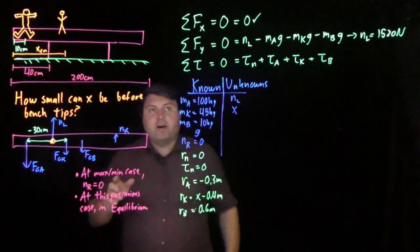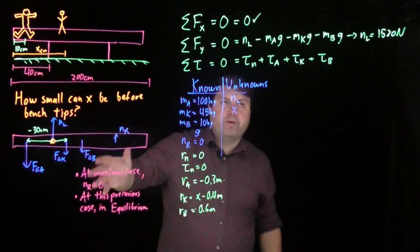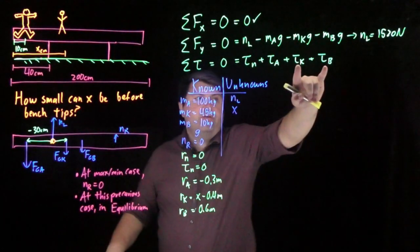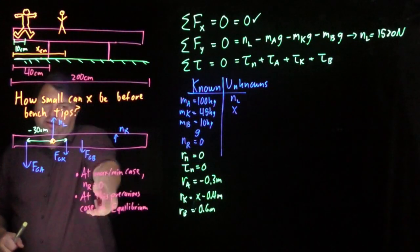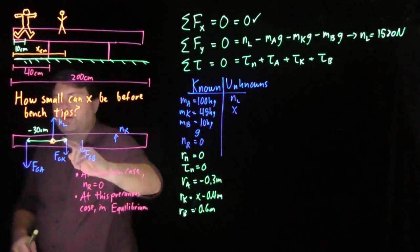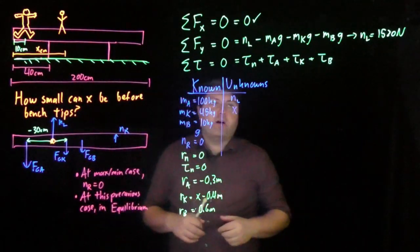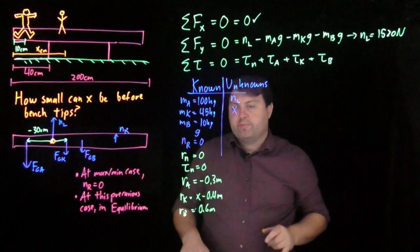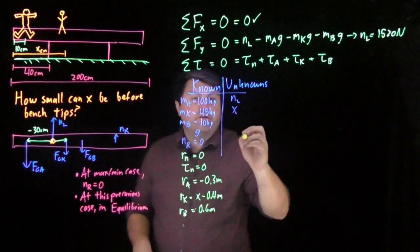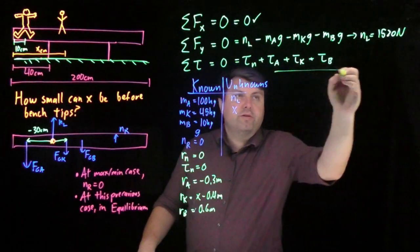Since it's all equal to zero, I can choose which way is positive, which way is negative. I have two terms going this way, two terms going into page, one term going into page and one term going out of page. So I'm going to choose into page as positive. And so then I can write in my torques now.